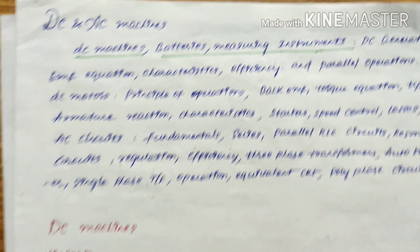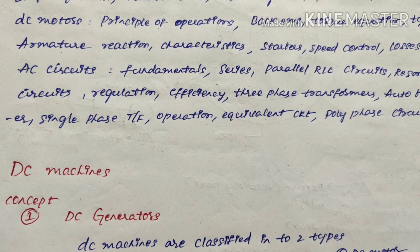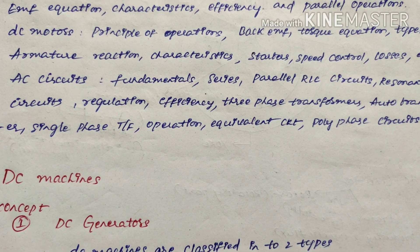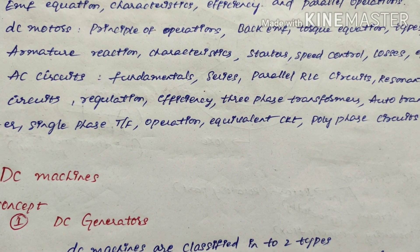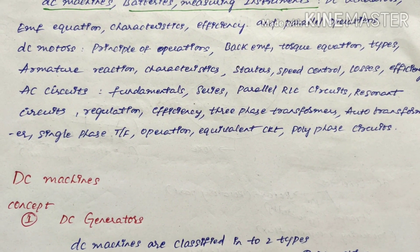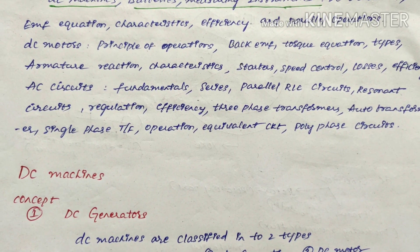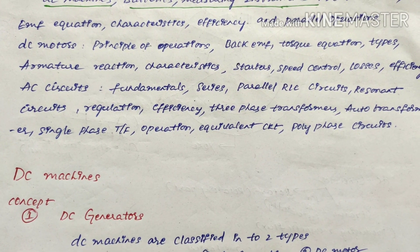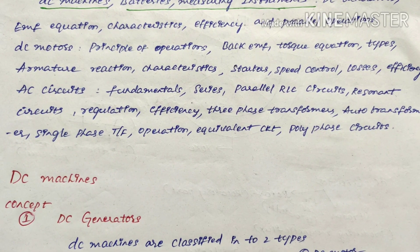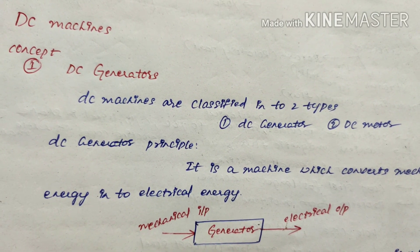DC machines are of two types: DC generator and DC motor. A generator uses mechanical energy as an input and gives electrical energy as an output. A DC motor takes electrical energy as an input and gives mechanical energy as an output. So a DC generator is the converse of a DC motor.